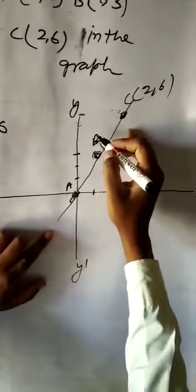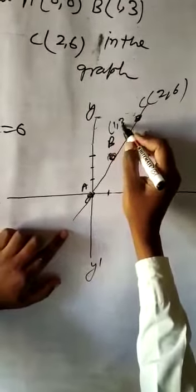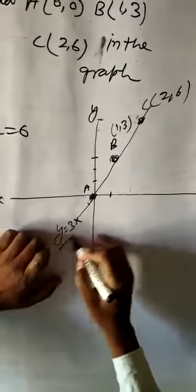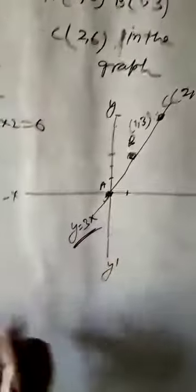A 0 0, B 1 3, C 2 6. This is graph Y equal to 3x.